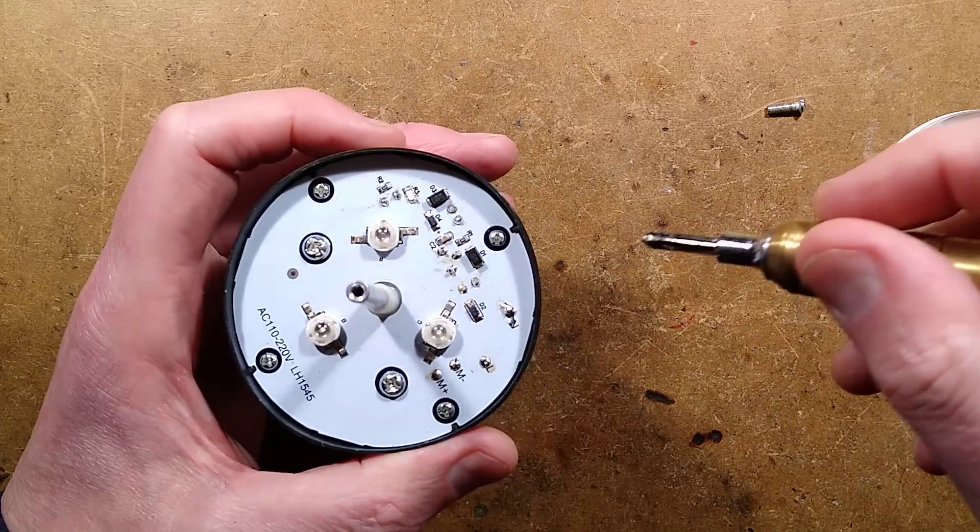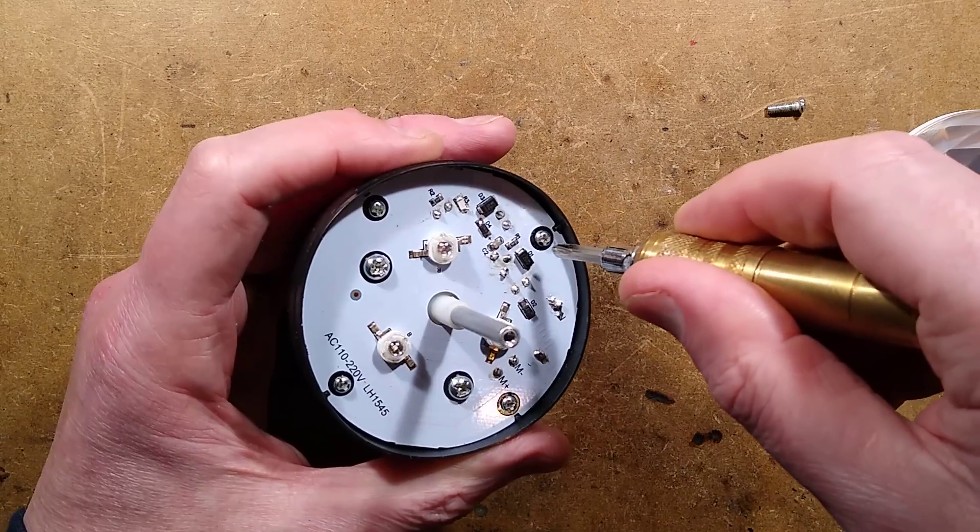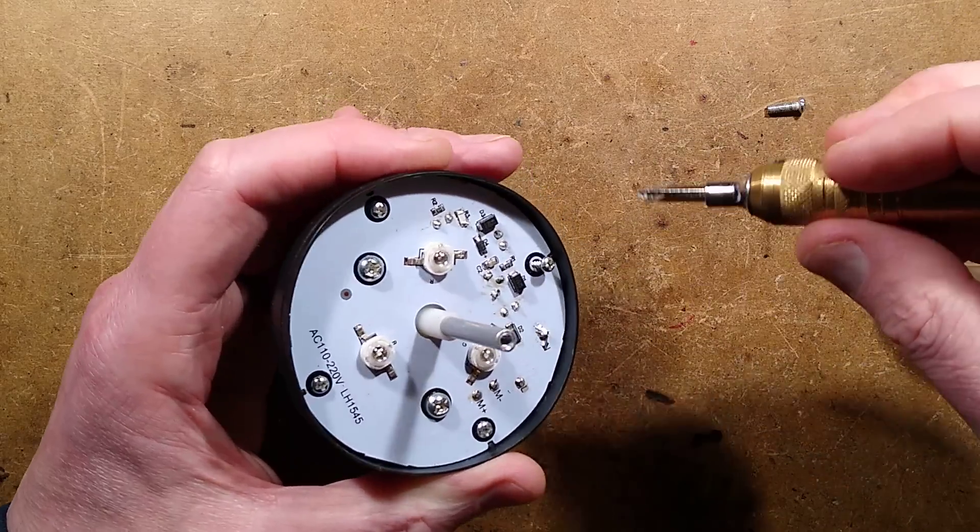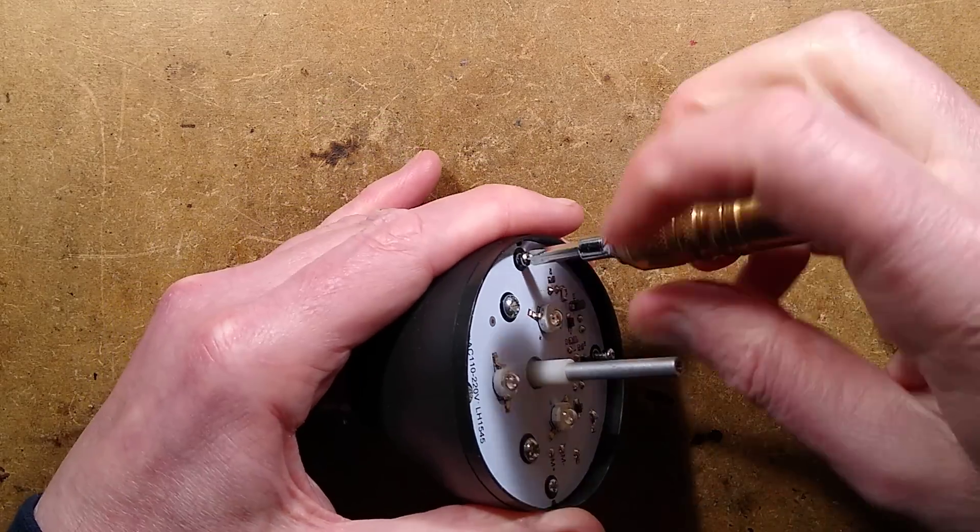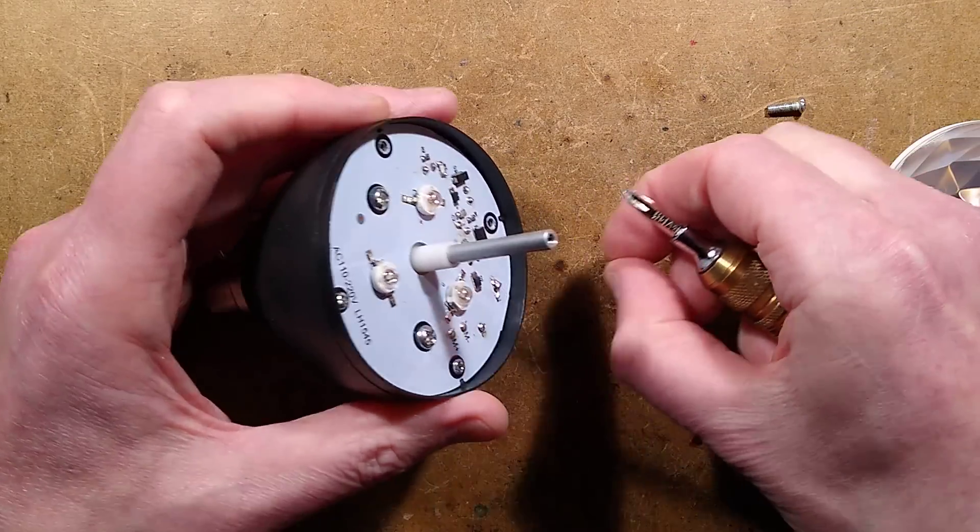Because it looks to all intents and purposes as if the whole power supply is integrated onto the circuit board alongside the LEDs, which is interesting. They normally have a separate power supply, either the capacitive dropper in that very odd one I got.